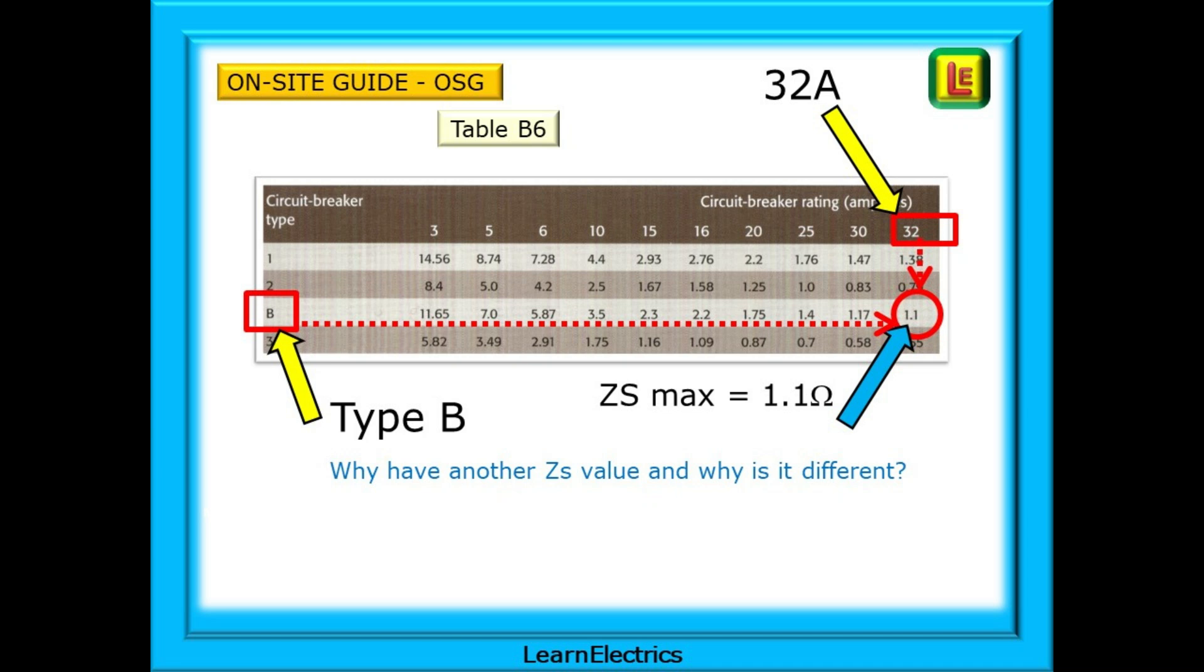ZS maximum is just 1.1 ohms, different again to the 1.44 that we started with and the 1.37 tabulated value. Why do we have another ZS value and why is it so very different?